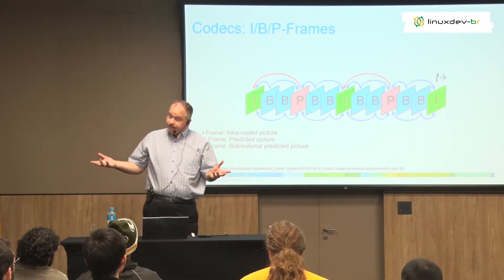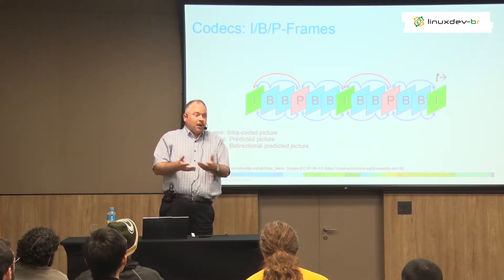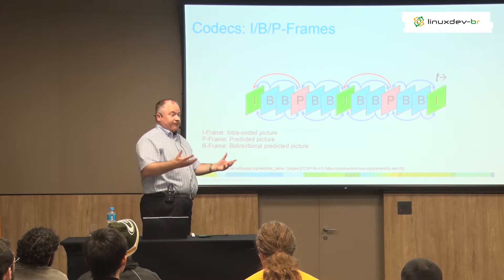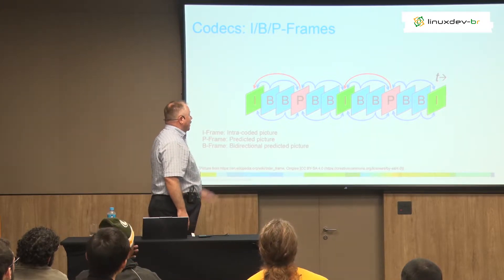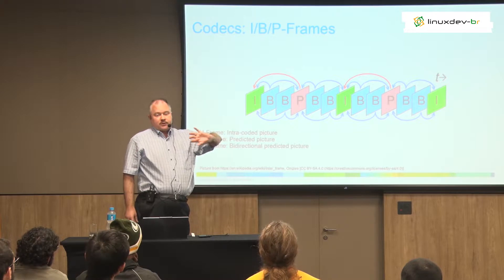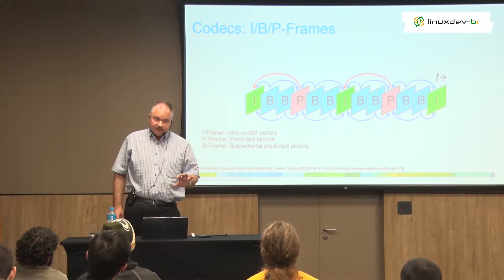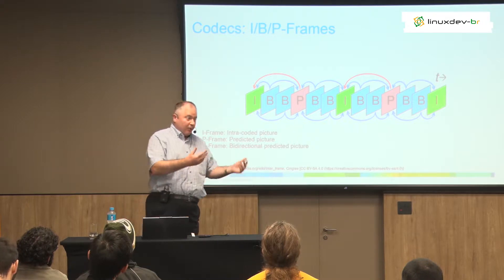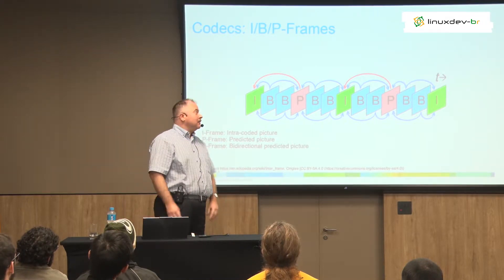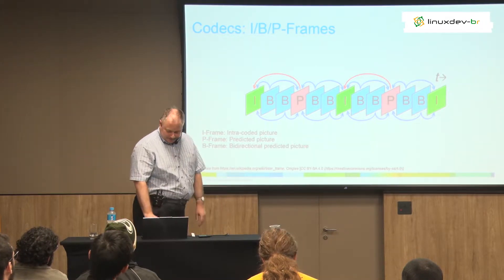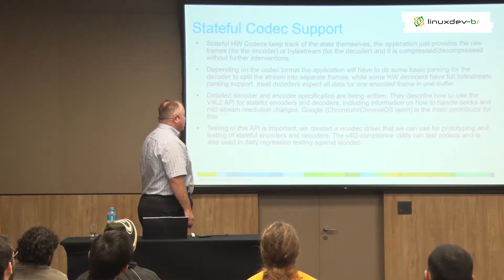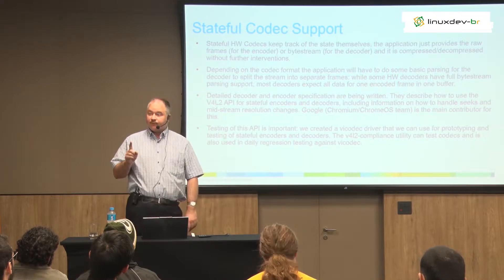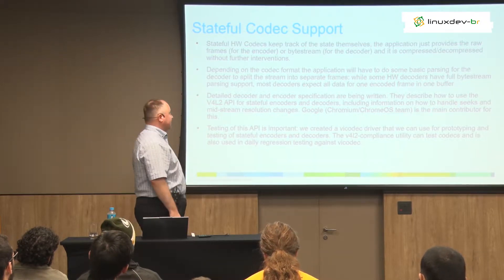But if you make a Blu-ray disc, then there are no latency issues and it's much more important that you achieve really good compression — so then you get B-frames. Not all hardware decoders can handle B-frames. Some only do P-frames — they're really geared towards mobile phones and video conferencing. So there are two types of hardware codecs. The first one we have supported for a very long time — five, six years.